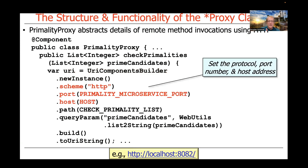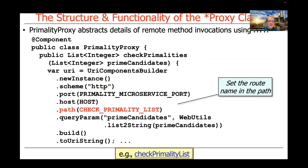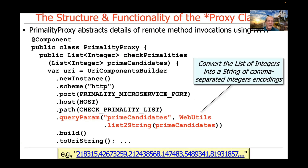We then supply the protocol, the port number, and the host address — for example, HTTP localhost port 8082, which is the port number for the primality proxy. We set the route name in the path using the path method, giving it the checkPrimality list string. Previously we used the fromPath static factory method, but now we use newInstance and fill in the scheme, port, host, and path. We then add the query parameter for the prime candidates, converting a list of integers into a comma-separated string of values.